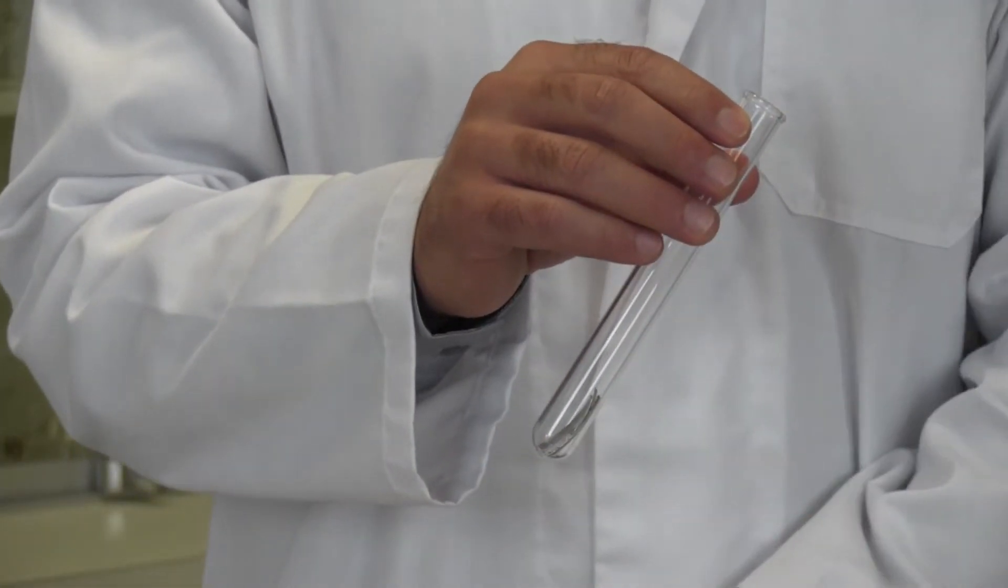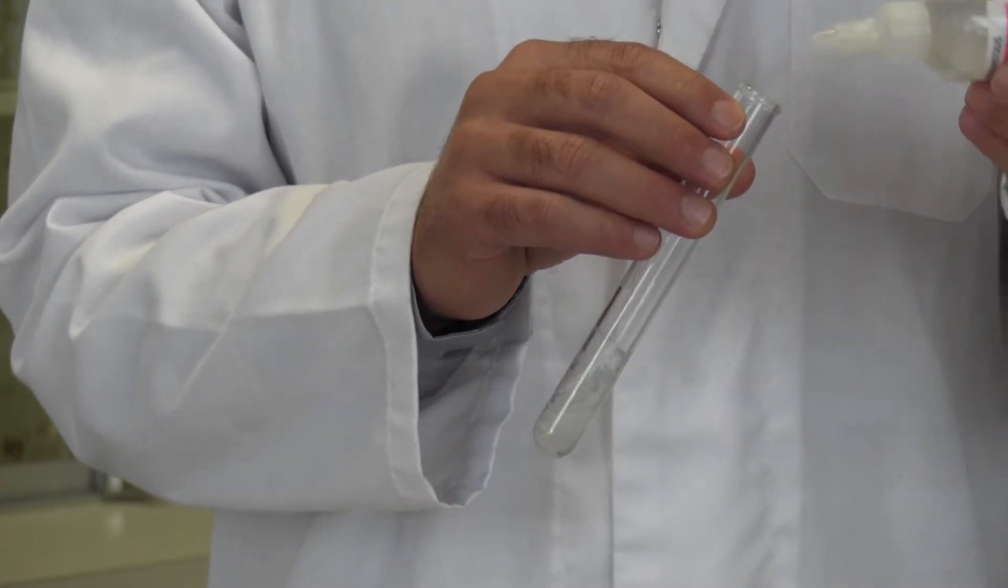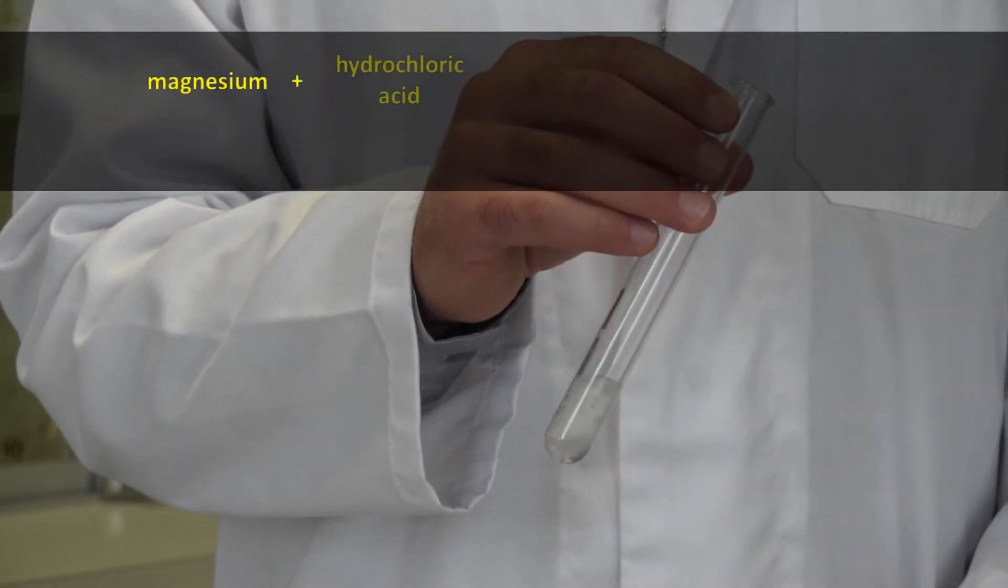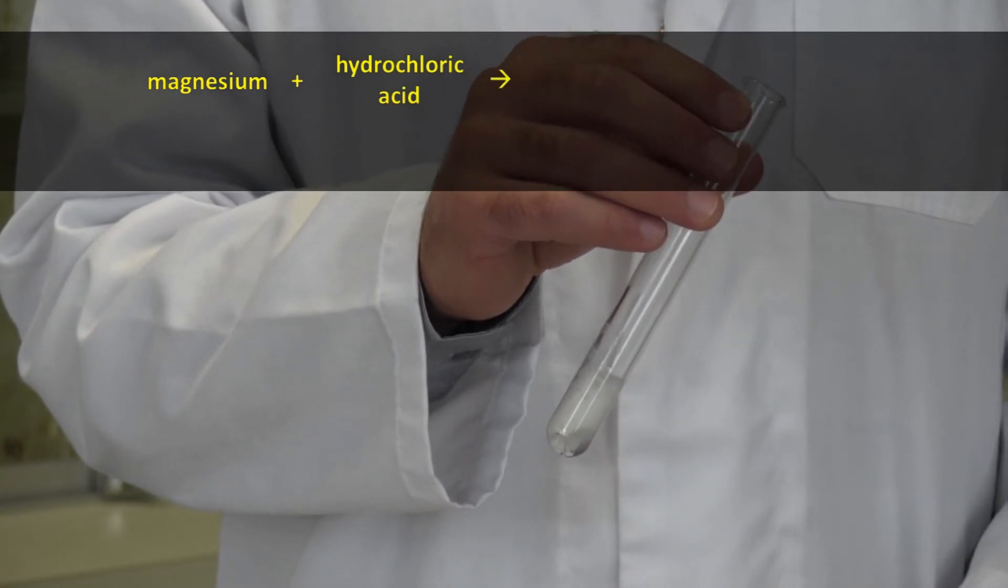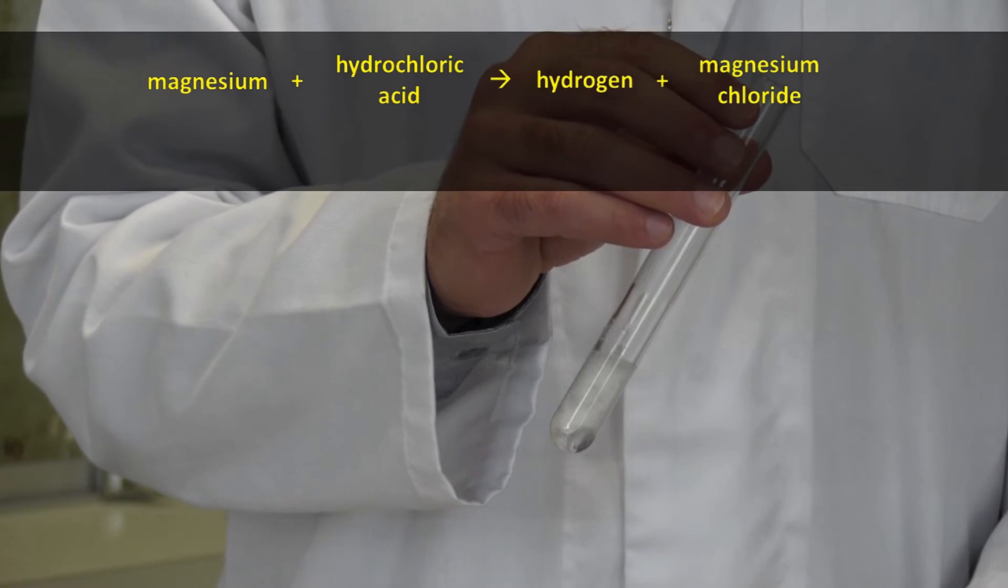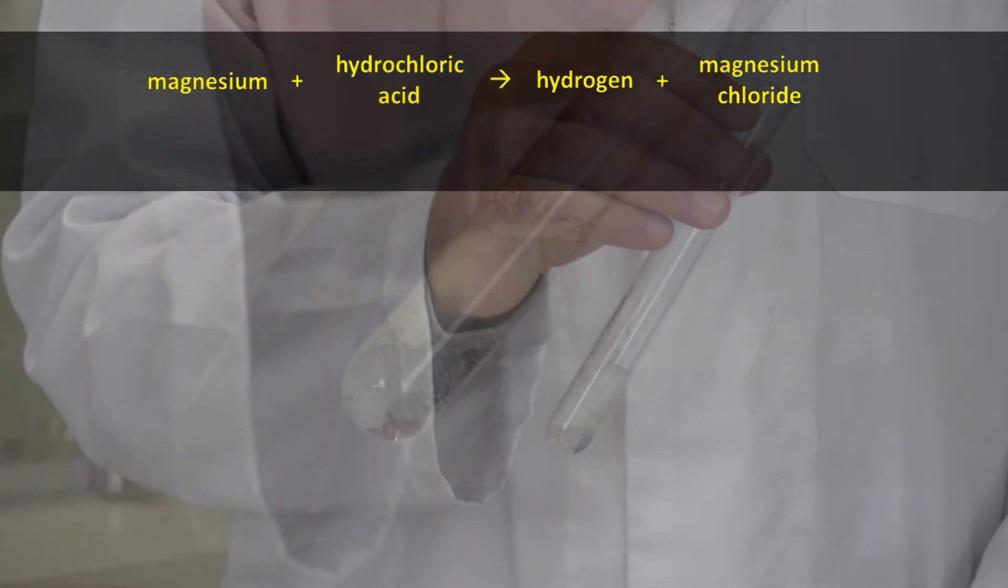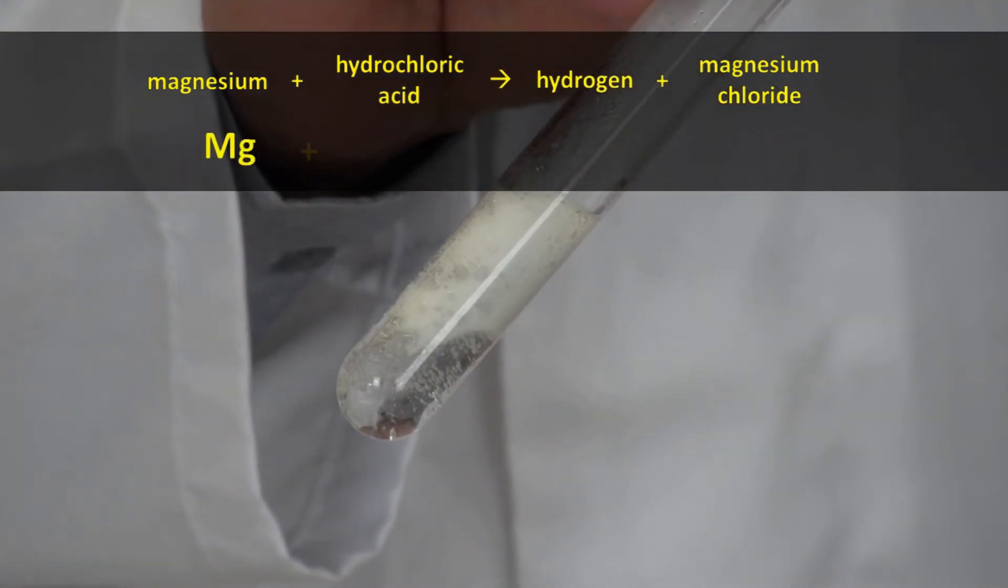The chemical equation for the reaction that produced the hydrogen gas can be written as magnesium plus hydrochloric acid produces hydrogen plus magnesium chloride, which once again we couldn't see because it remained dissolved in the acid.